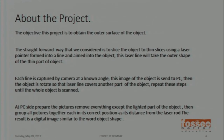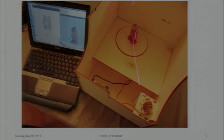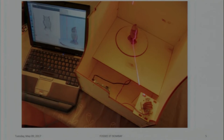The object of the project is to obtain the outer surface of the object. The straightforward way is to consider a thin slice of the object with laser pointers formed into a line and aimed at the object. These laser lines will capture the outer shape of the thin part of the object. I will show it in a diagram.